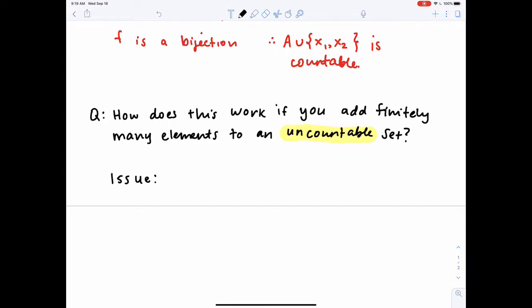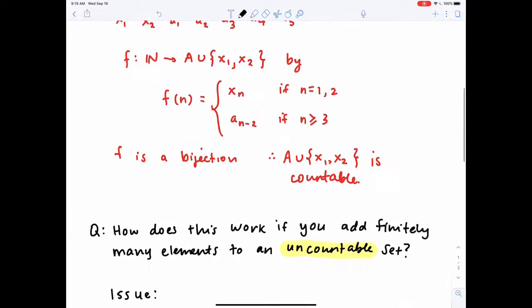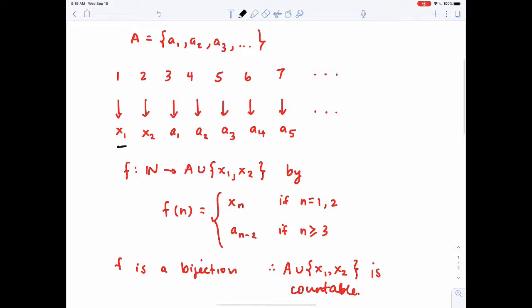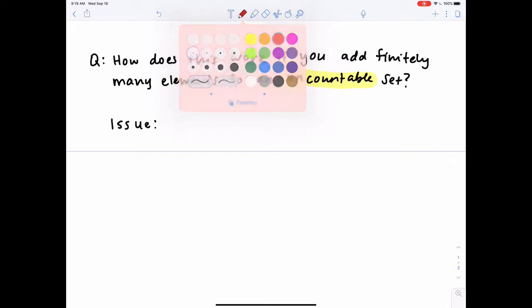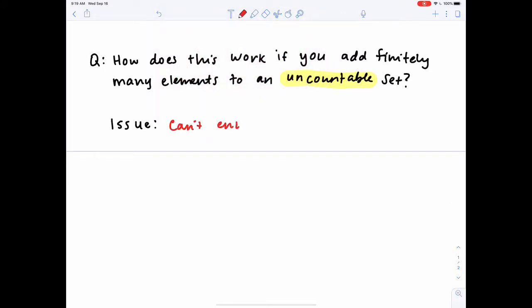Well, the issue is that we can't enumerate the elements. So how am I going to just absorb my new points? Before, I was able to enumerate my elements and I just shifted them over and I put x₁ first, then x₂, and then I continued labeling. But uncountable sets cannot be denoted A₁, A₂, A₃, etc. So we can't enumerate the elements. So how do you absorb the new points?